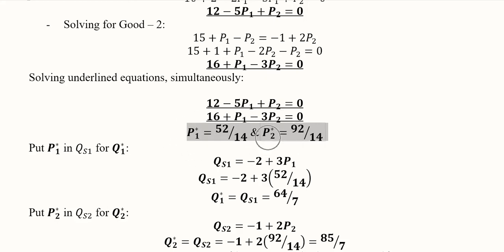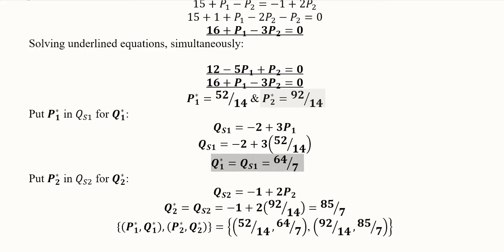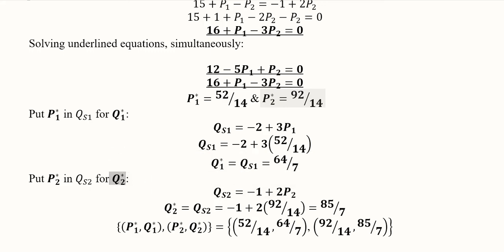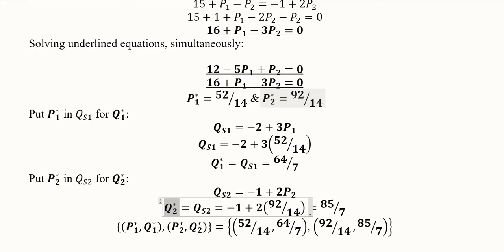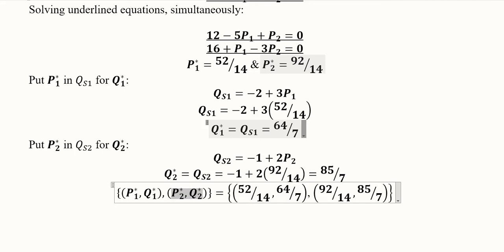Once p1 and p2 are found, we call them p1* and p2* (equilibrium prices). We then find the equilibrium outputs: for q1*, we use the supply function qs1 and substitute the value of p1*. For q2*, we use the supply function of good two and substitute p2*, giving the result 85/7 as the equilibrium output of good two. These are the equilibrium outputs for good one and good two respectively.